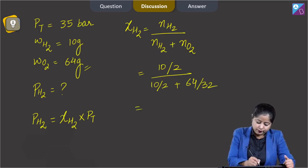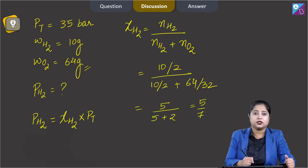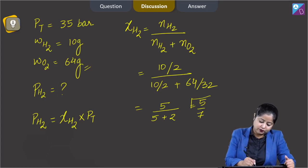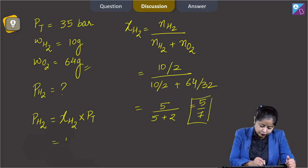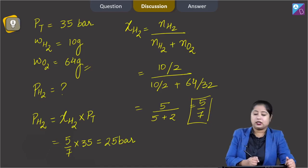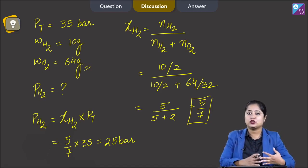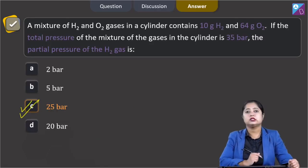Putting this value into the equation: (5/7) × 35 = 25 bar. The partial pressure of H2 gas in the mixture is 25 bar. The correct answer is option C.